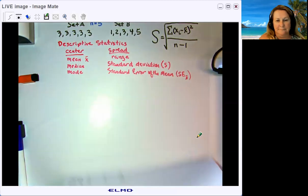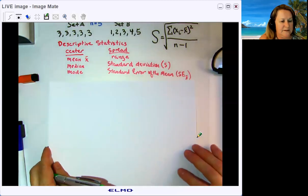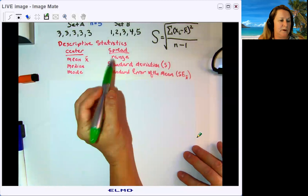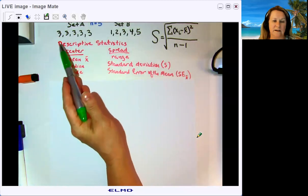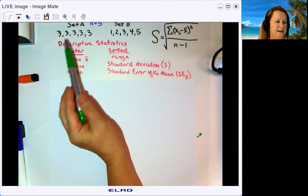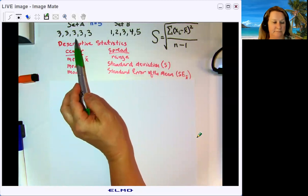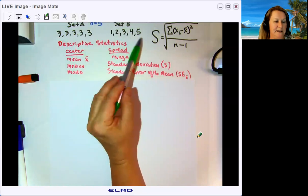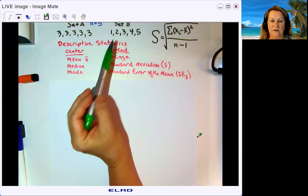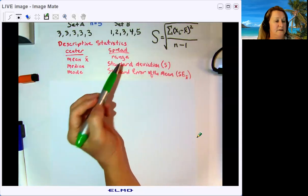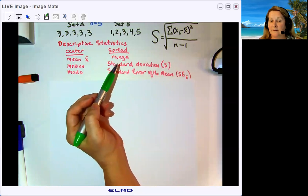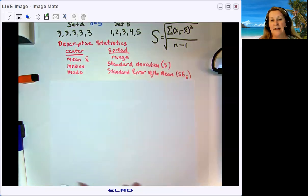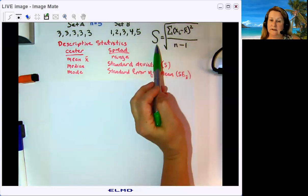Now let's look at the spread. One measure of spread is range, which is the highest minus the lowest data point. In data set A, the range is zero. In data set B, the range is five minus one, which is four. That gives us a better picture that these two data sets may be different.